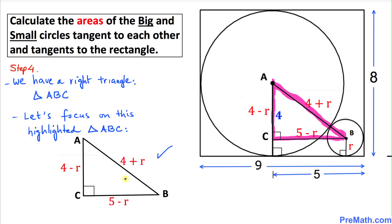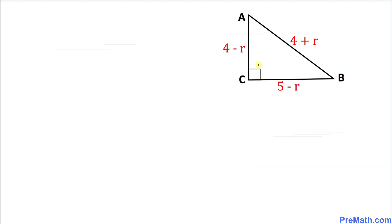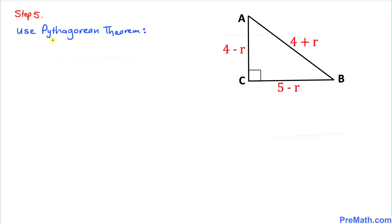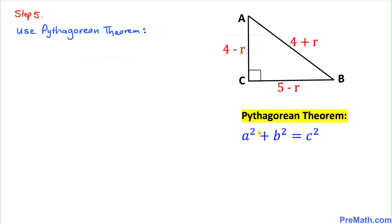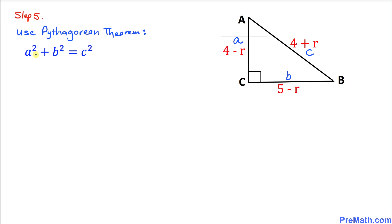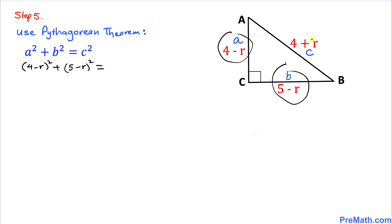Focusing on right triangle ABC, we apply the Pythagorean theorem: a squared plus b squared equals c squared. Here, a is four minus r, b is five minus r, and c (the hypotenuse) is four plus r. So we write: (4 minus r) squared plus (5 minus r) squared equals (4 plus r) squared.